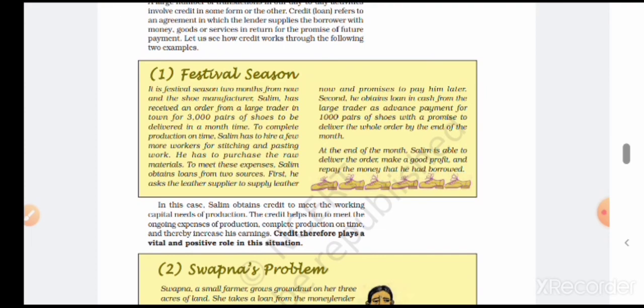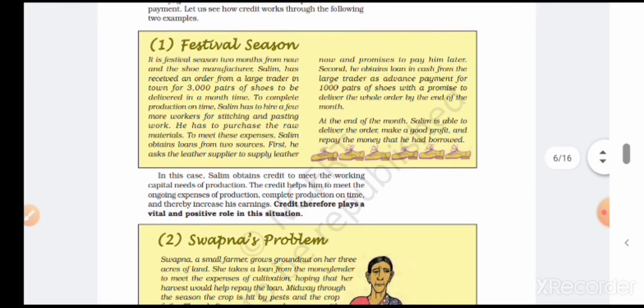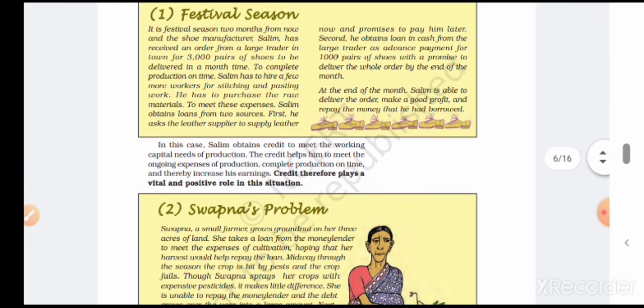Let's discuss these two situations. One, he borrowed things from a person - another, he took a loan from the bank. The first source is informal and the second source is formal. He obtained the cash loan from the large trader as advance payment for one thousand pairs of shoes with the promise to deliver the whole order by month's end. At the end of the month, Salim is able to deliver.